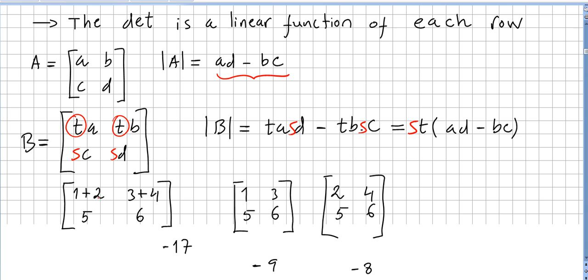Let us say we have a matrix [1+2, 3+4; 5, 6], and then we have two matrices where the first row will be the first entries here, or the first summands: [1, 3; 5, 6] and [2, 4; 5, 6].